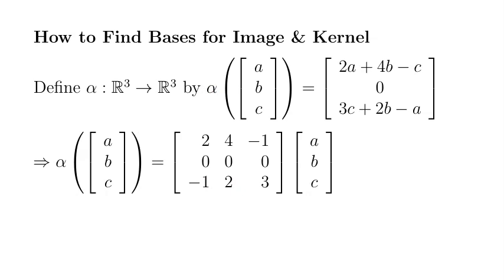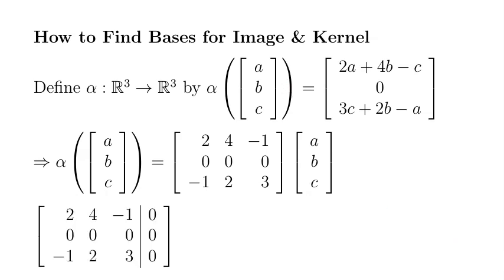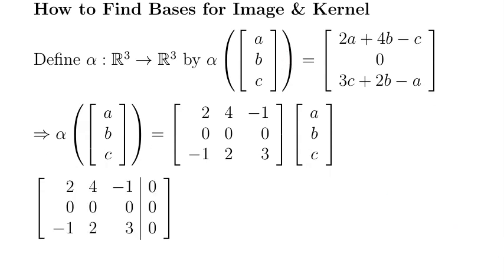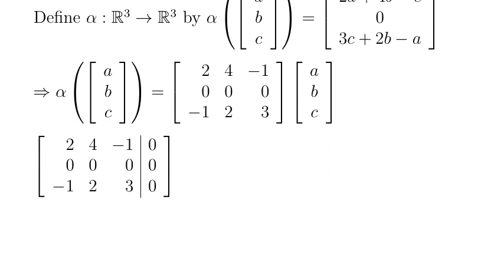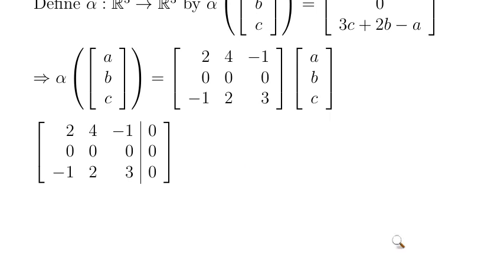I'm going to create an augmented matrix, putting all zeros on the right-hand side, since we're looking for the kernel — we want the right-hand side to be 0.